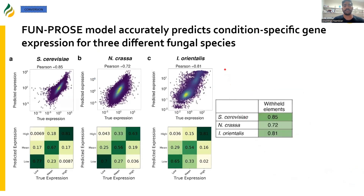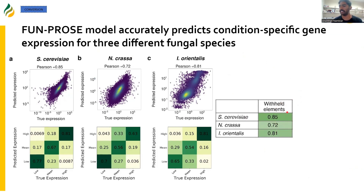So we ran FunPros on three different fungal species — Saccharomyces cerevisiae, Neurospora crassa, and Issatchenkia orientalis — and we found that FunPros predicts condition-specific gene expression accurately for all three species. What you see here is the correlation coefficient between predicted and true expression levels for withheld elements. Withheld elements means that the model is being trained on combinations of genes and conditions not seen during training, though it may have seen the genes and conditions separately, just not together.